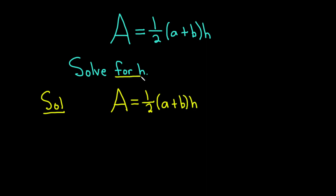And we're looking for h. So it might be a good idea to get rid of the fraction first, this one-half. To do that, we can multiply both sides by 2.